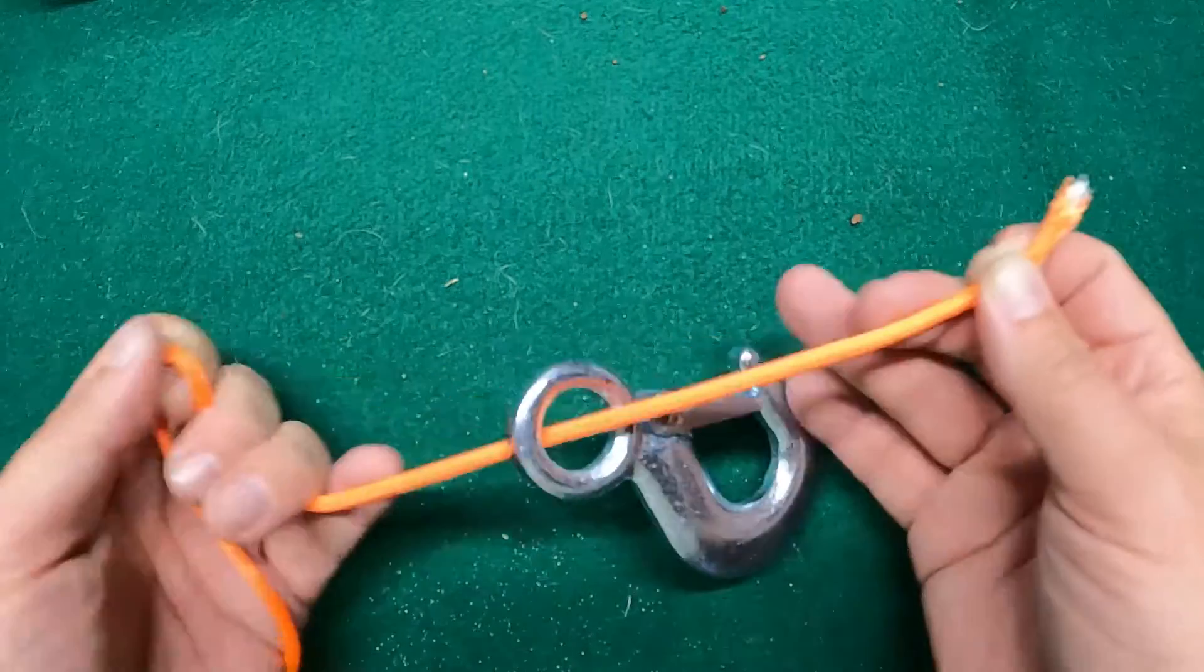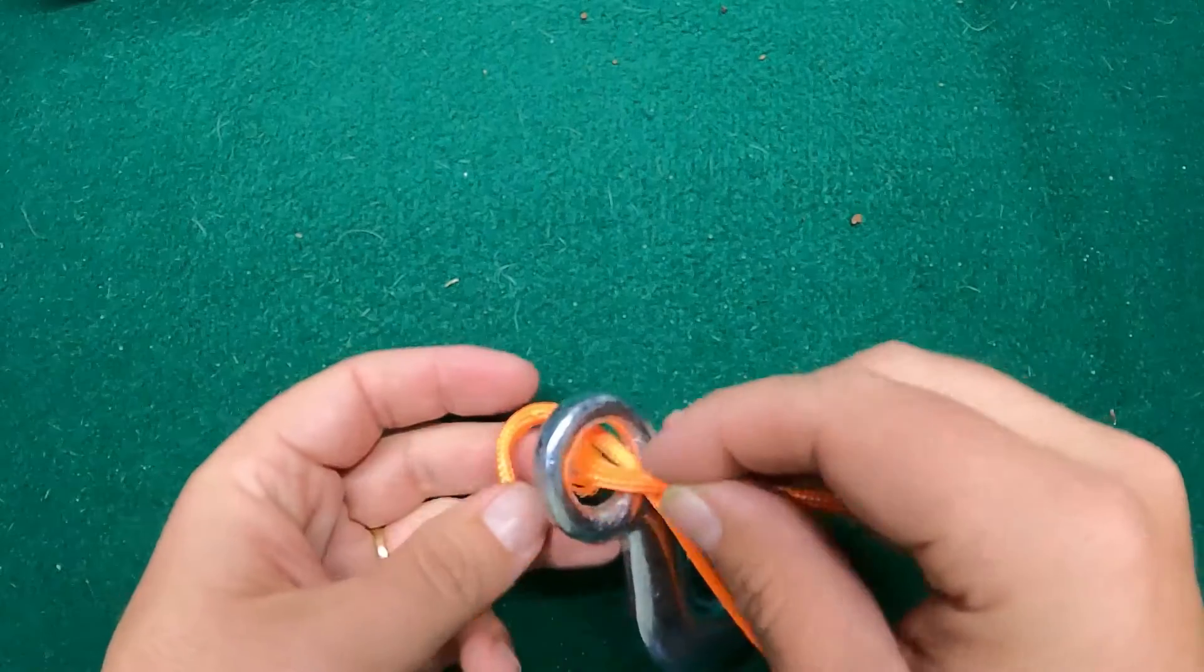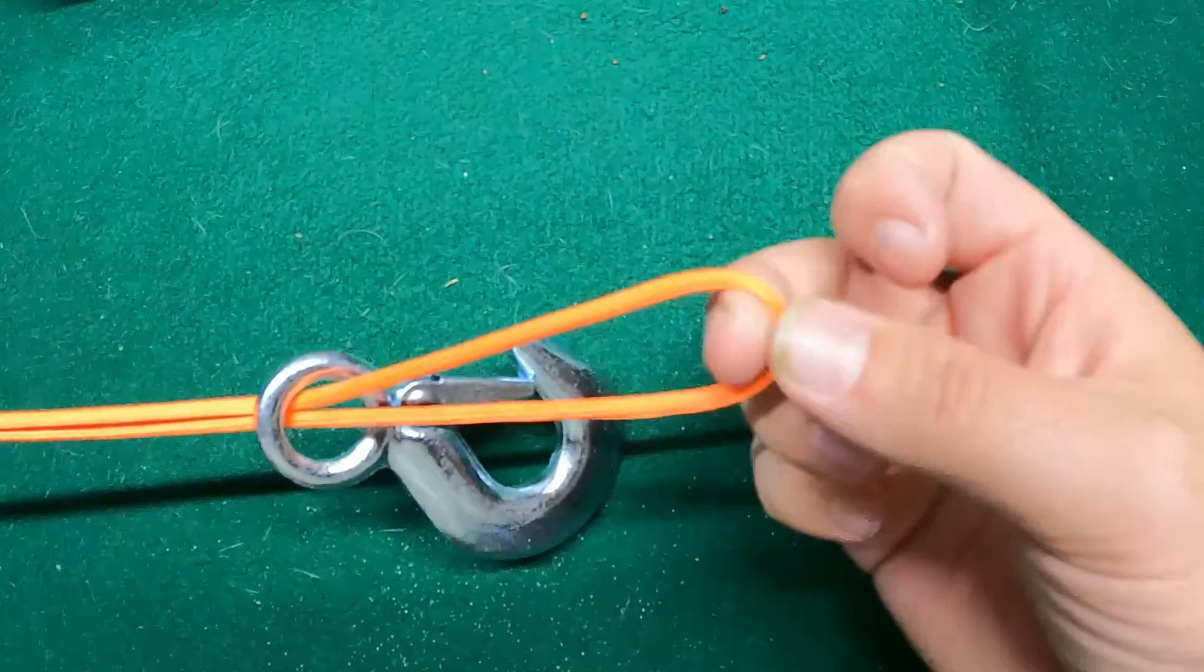As always, you run your line through the hook or whatever you're going to be putting on. Then you will run the tag end back through that same hole. Make sure you double over.